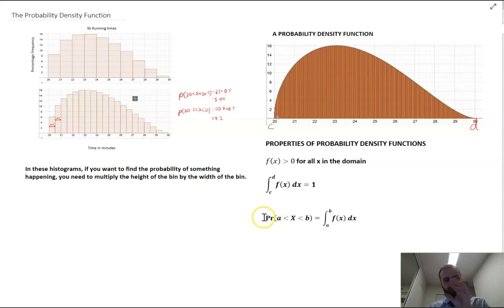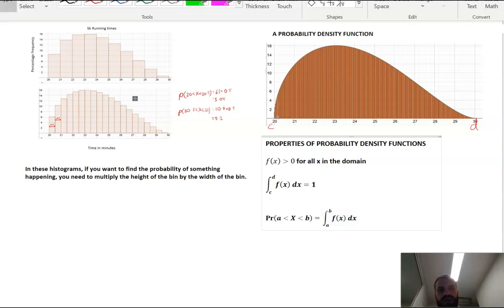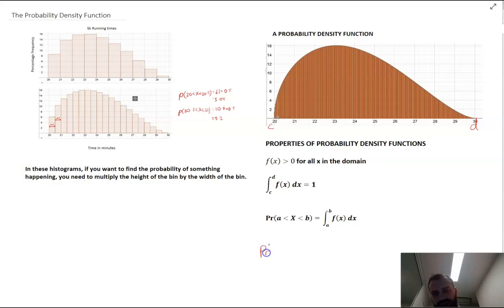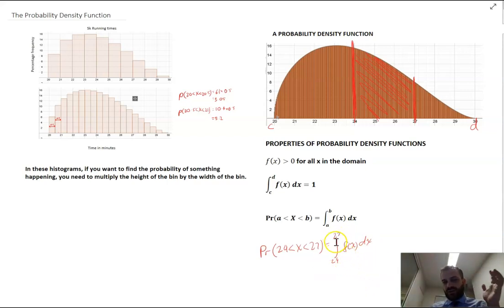And finally the biggie. The one that you're going to use a lot of. The probability that a is less than x which is less than b is equal to the integral between b and a f(x) with respect to x. Now what does that mean? Well in our drawing here if you wanted to find the probability that someone could run between 24 and 27 minutes you would find the integral. So between 24 and 27 minutes you would find that area. And you would do that by finding the integral between 27 and 24 of the function. Now I'm not going to do that with this function because it's a complicated function. But that is how you would do it. And that's a really important part of this probability density function.